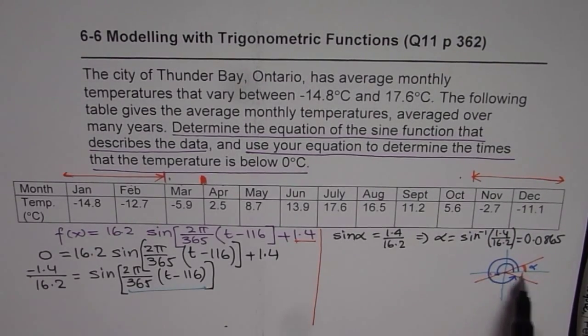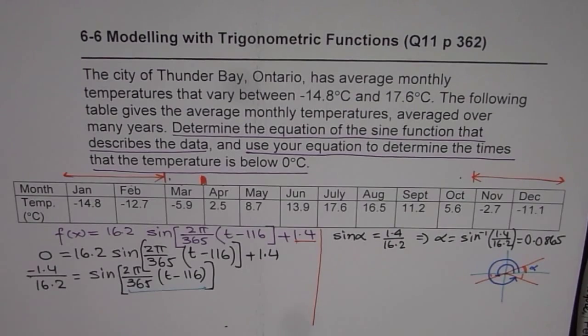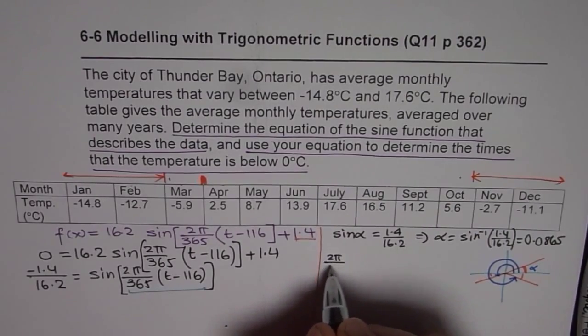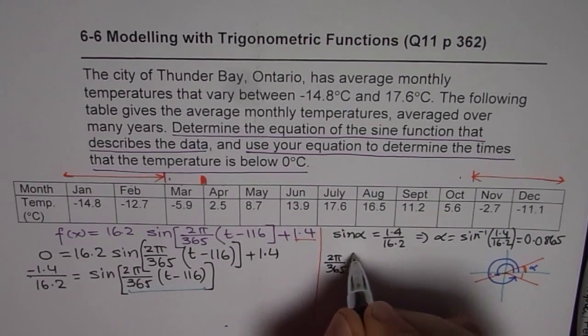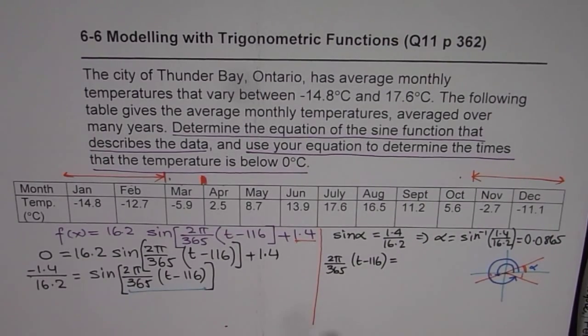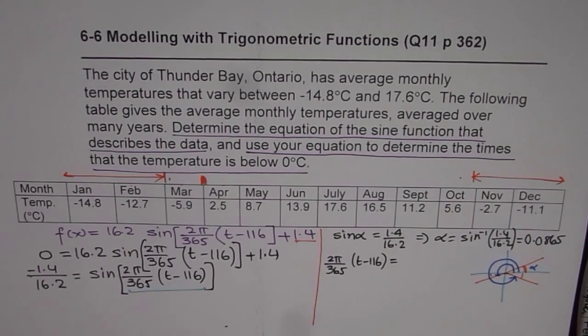Do you see that? So those are the two values for this expression, which we need to solve for. So one expression we get is, that means 2 pi over 365 times t minus 116 should be equal to pi plus alpha. So let me